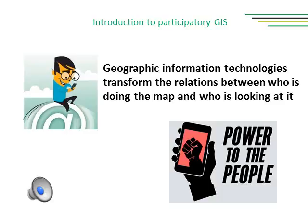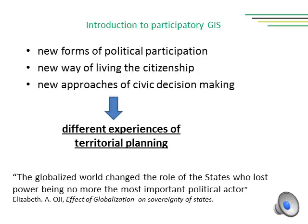The advent of geographic information technologies changed who had access to maps and the power relations between who is making the map and who is looking at it. Those changes affected both the institutional and political way of describing and building the territory. As affirmed by Elizabeth A. Augie, the globalized world changed the role of states, who lost power as the most important political actor, facilitating the rising of a new conception of citizenship no longer strictly linked to national belonging. This led to the creation of new forms of political participation.